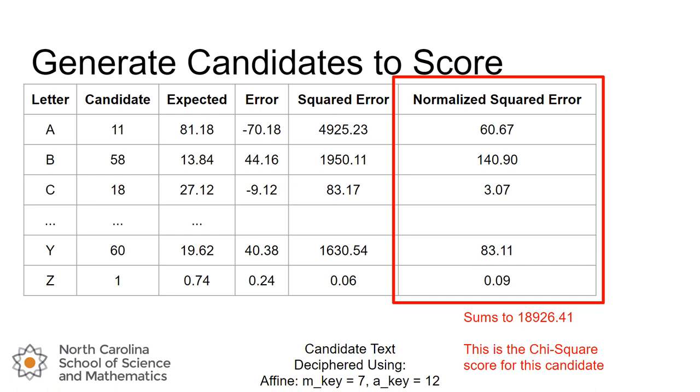And if we were to total all of the normalized squared errors, this is the statistic that we were trying to create. This score of 18,926.41 is a chi-squared score for this candidate. So the candidate was generated using the affine decipher with a multiplicative key of 7 and an additive key of 12. And you want to think about what would be a good value for this score? And you think, what makes a good candidate? A good candidate would have very small errors, meaning the number of letters we see in the candidate is close to what statistically we would expect there to be there. So small errors would be small squared errors, and small squared errors would lead to small normalized squared errors for each letter. So if we totaled up all 26 normalized squared errors, we'd want that they be really small. A really small chi-squared score should indicate something that's very close to what we would expect in a plain old plain text.